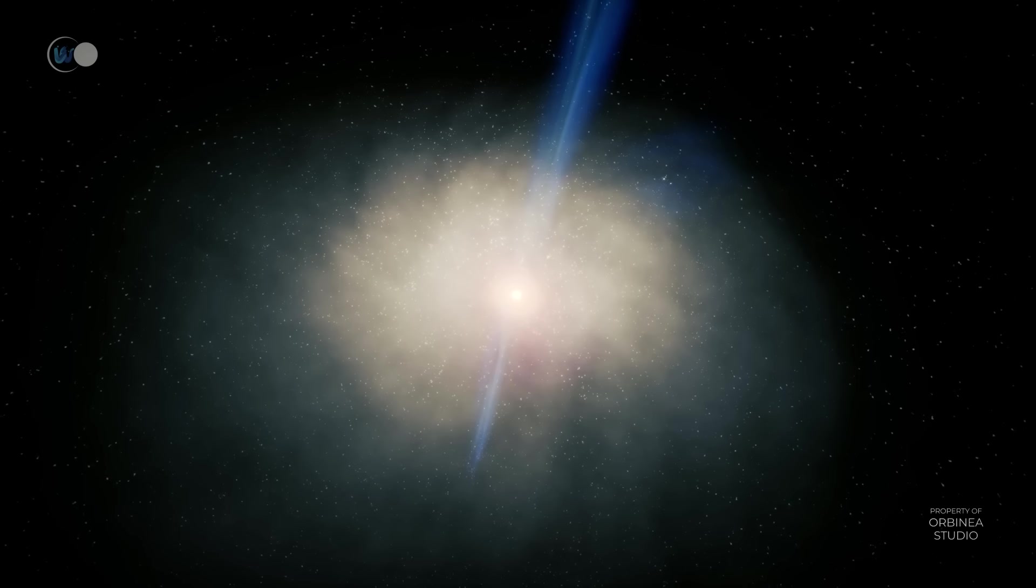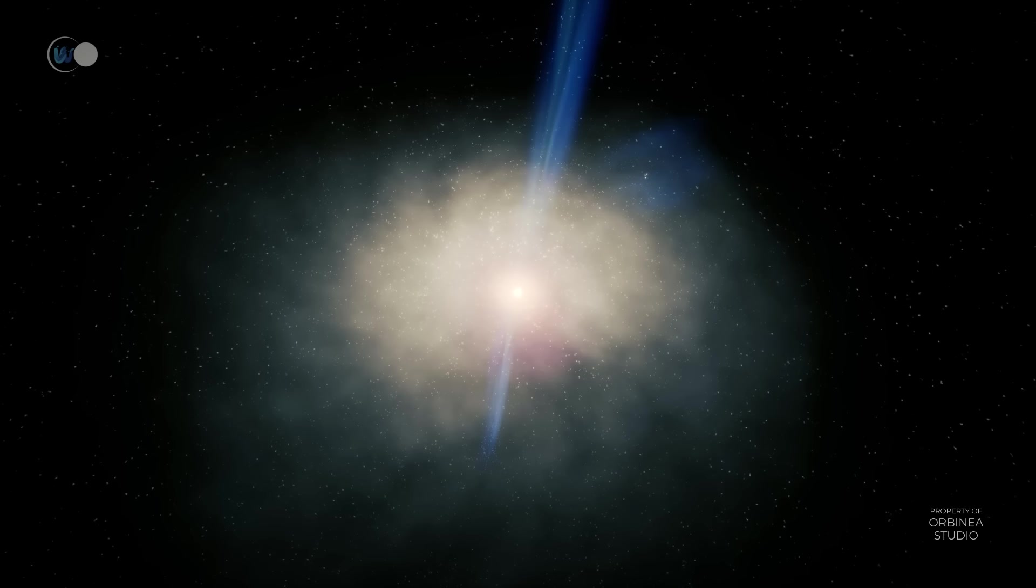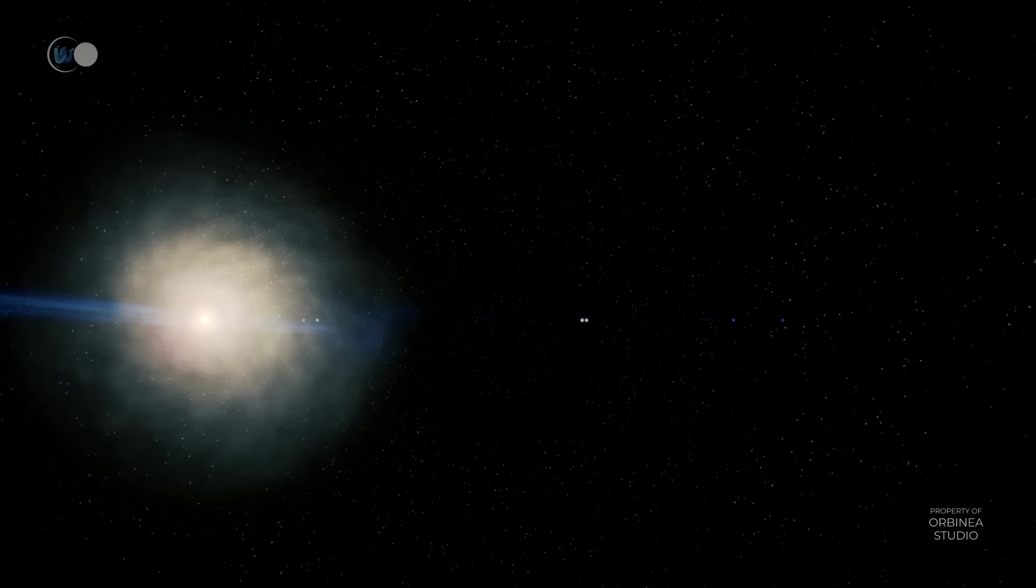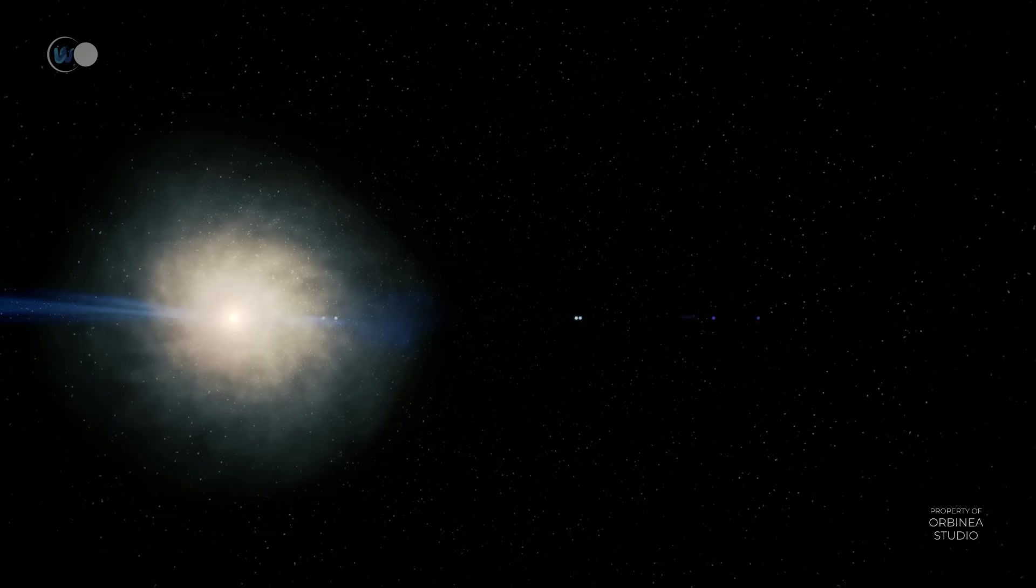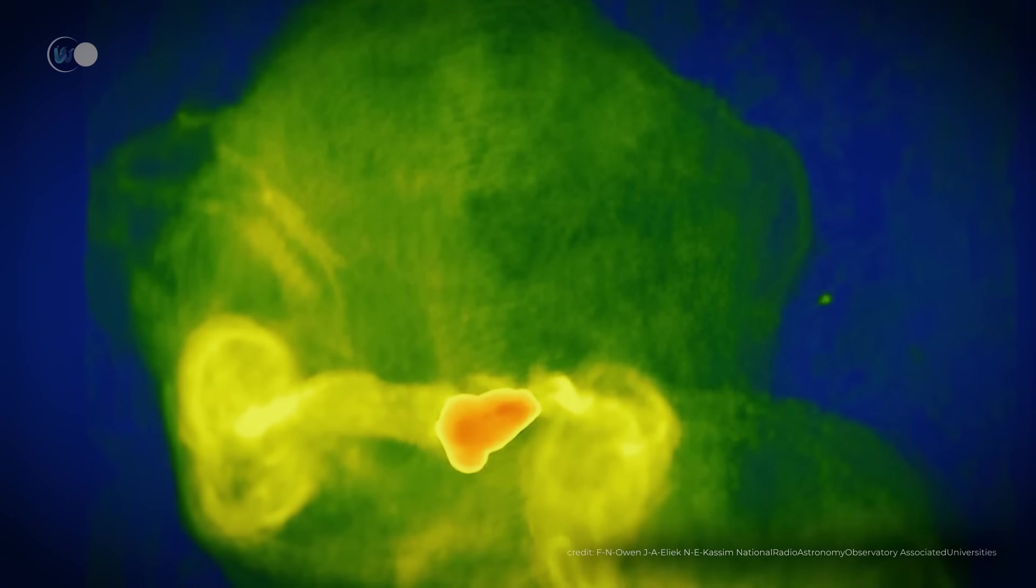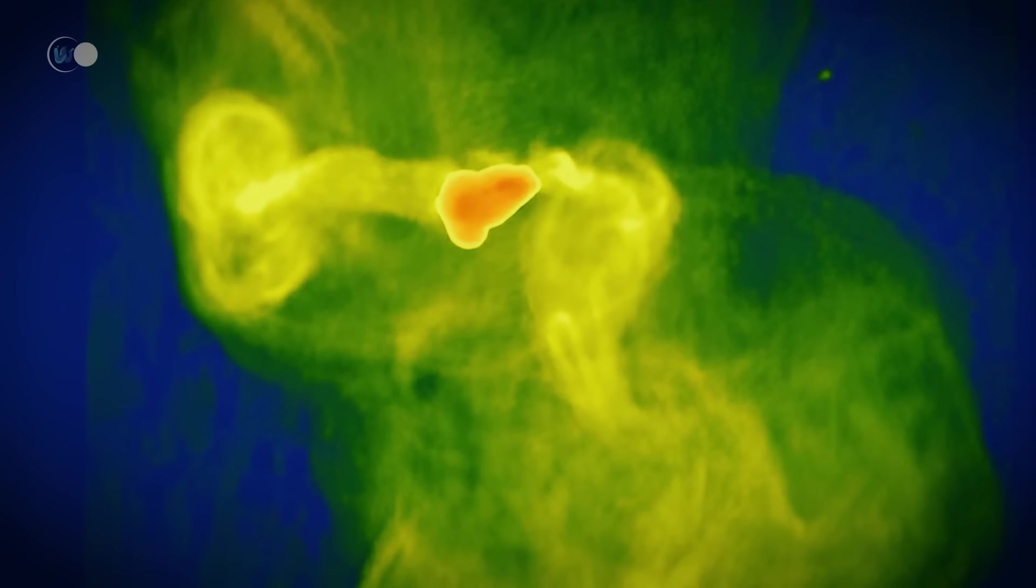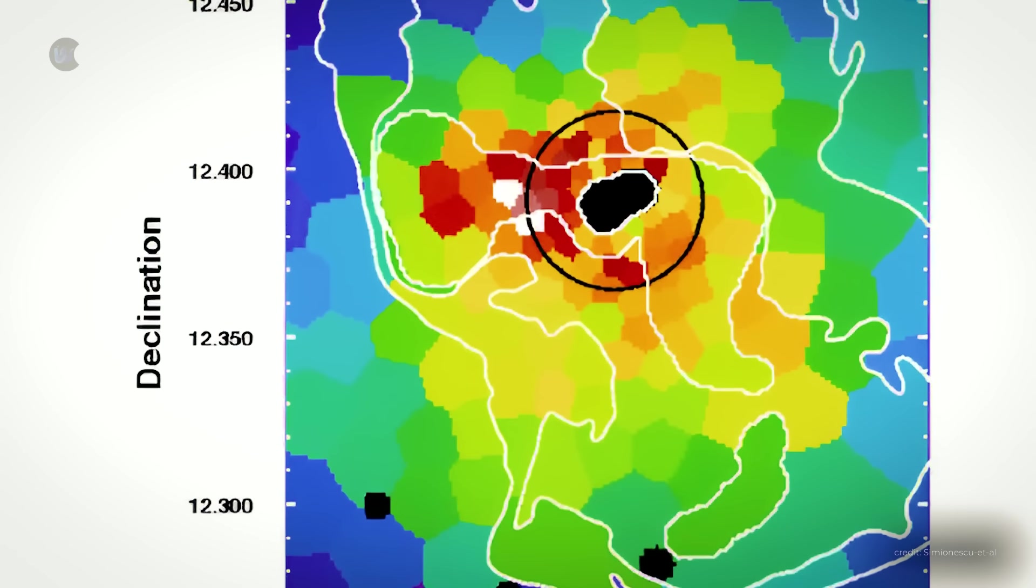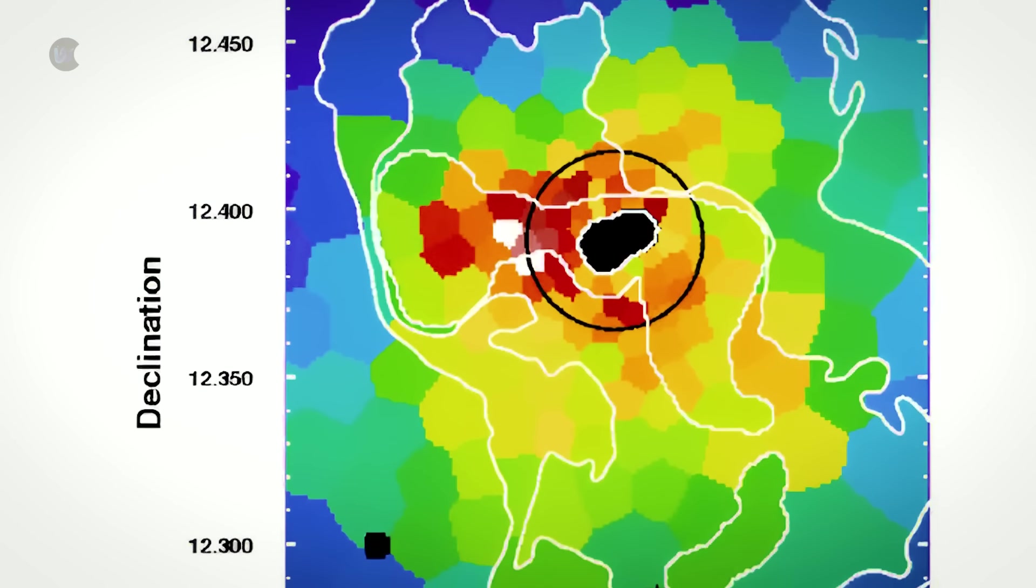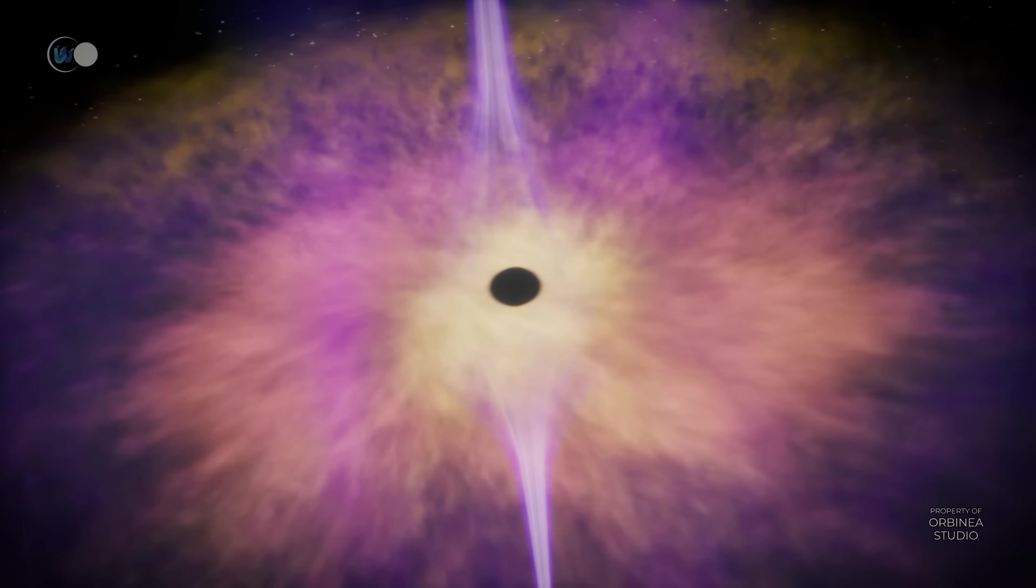Messier 87 has a core surrounded by a diffuse, extended, dust-free envelope. M87's galactic halo in diameter are much larger than its visible part, reaching nearly one million light-years. M87's total mass is estimated at around 200 times that of the Milky Way. Its extended stellar envelope is around 978,000 light-years in diameter, compared with the Milky Way's 326,000 light-years. But how is M87 structured?